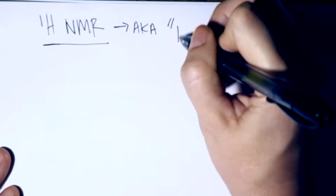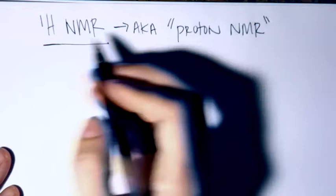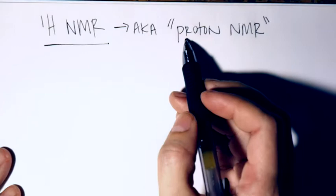In this video we're going to cover H1 NMR, which you'll also hear referred to as proton NMR. An H1 atom is made up of a single proton, so a lot of times you'll hear this referred to as proton NMR — proton is just referring to the H1.